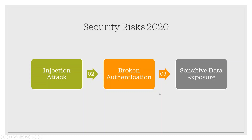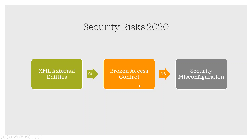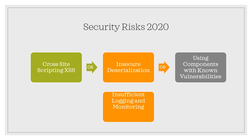The top 10 security risks for this year are: first, injection attack; second, broken authentication; third, sensitive data exposure; fourth, XML external entities; fifth, broken access control; sixth, security misconfiguration; seventh, cross-site scripting; eighth, insecure deserialization; ninth, using components with known vulnerabilities; and tenth, insufficient logging and monitoring.